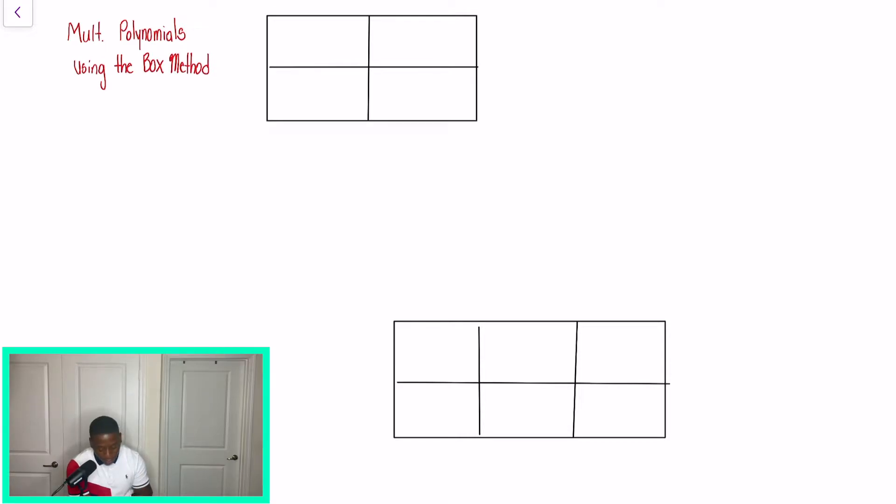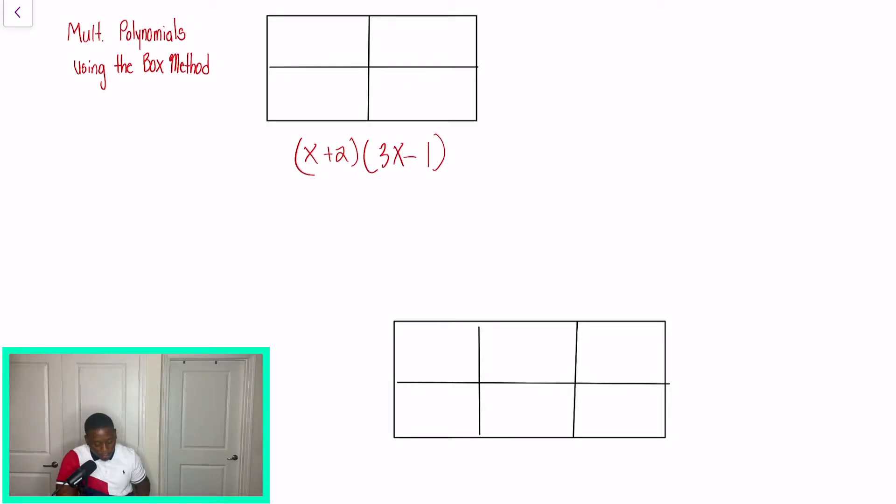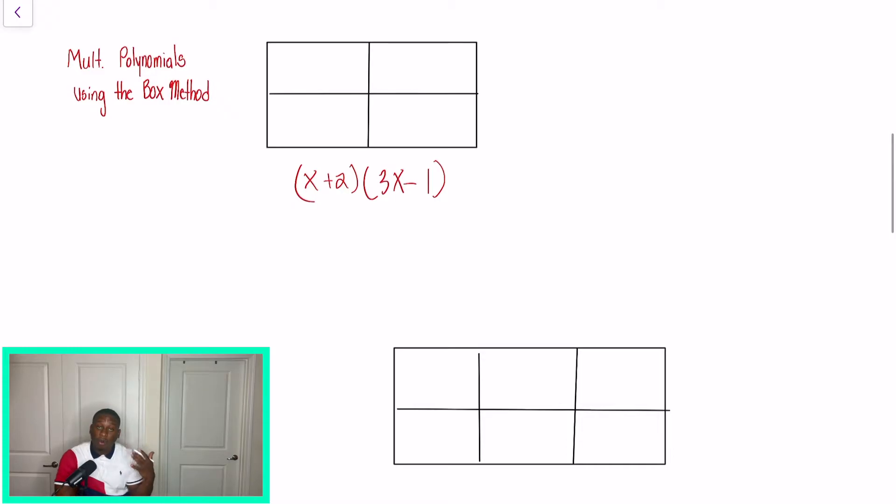So in our first example, it's asking us to find the product of x plus 2 times 3x minus 1. Now, the reason why I love the box method so much is because it gives a great visual. So what we have to understand is when we set it up, whatever is in parentheses, we have to keep it together. And what I mean by that is x plus 2 has to stay together, and 3x minus 1 has to stay together.